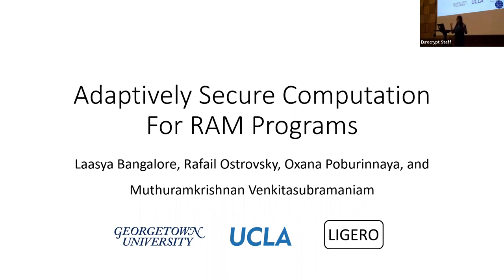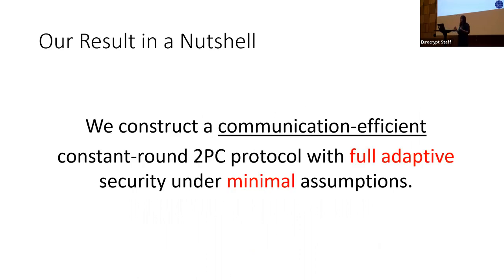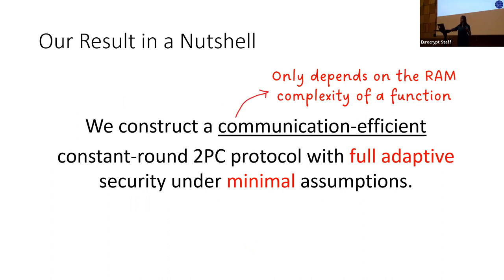I'll try to keep it interesting given that adaptive security is heavyweight and RAM programs can get complex too. Our main result is to construct a constant-round two-party computation that achieves full adaptive security under minimal assumptions. The focus of this talk is communication efficiency — specifically, we want the communication complexity expressed in terms of the RAM complexity of the function, rather than the circuit complexity.